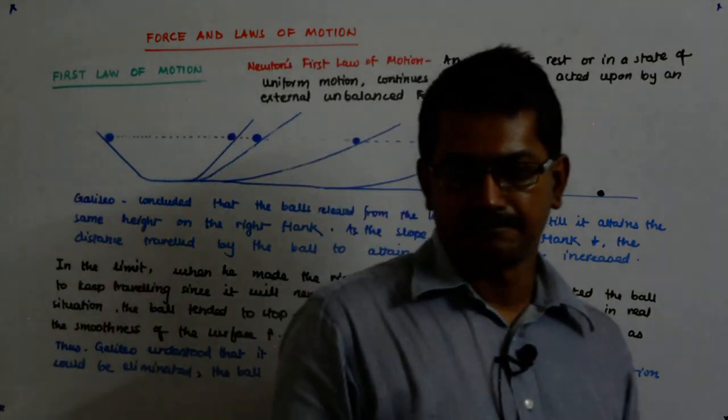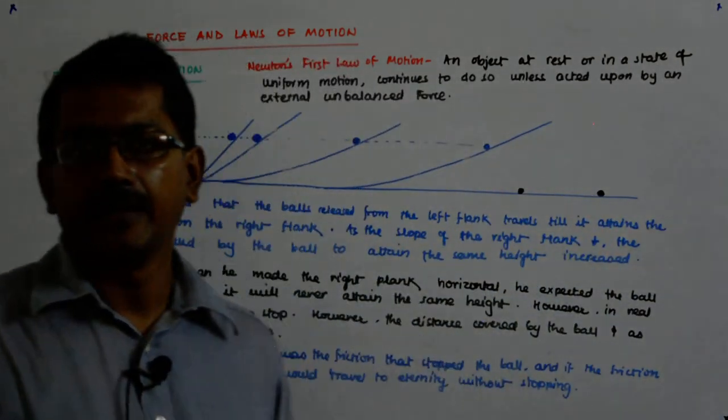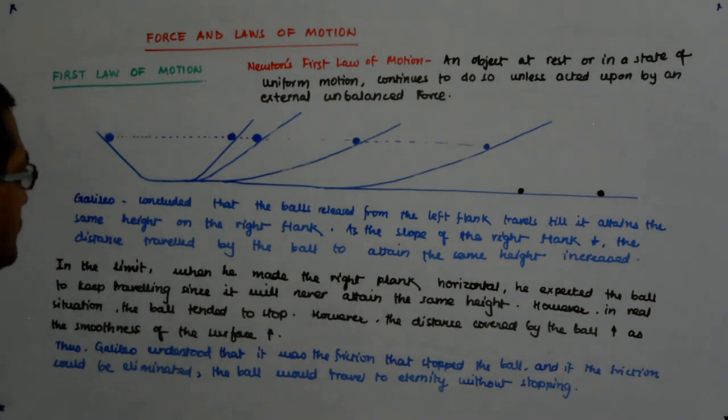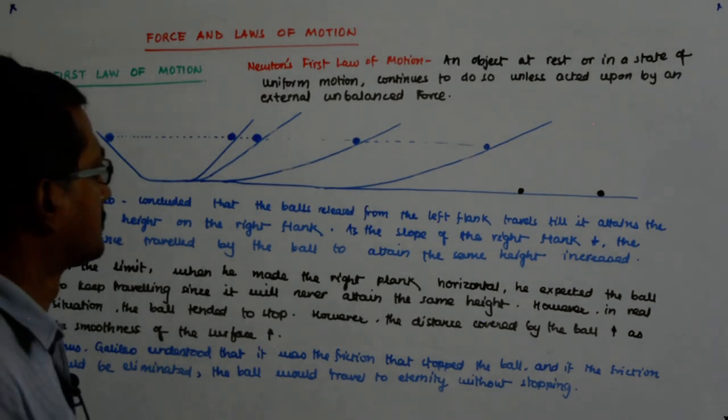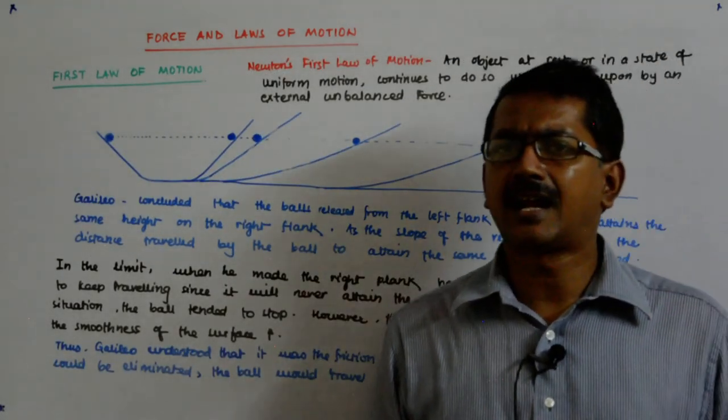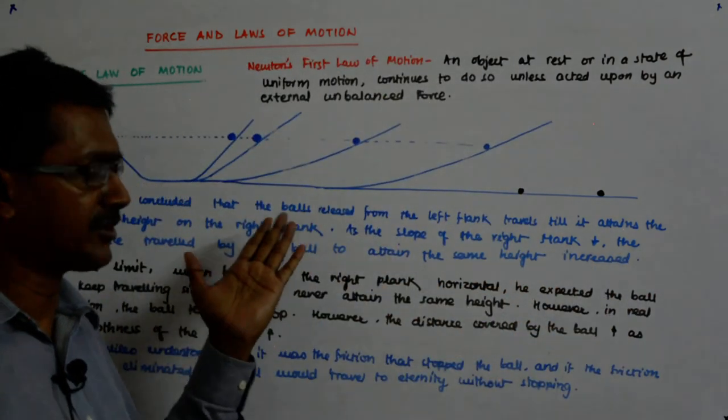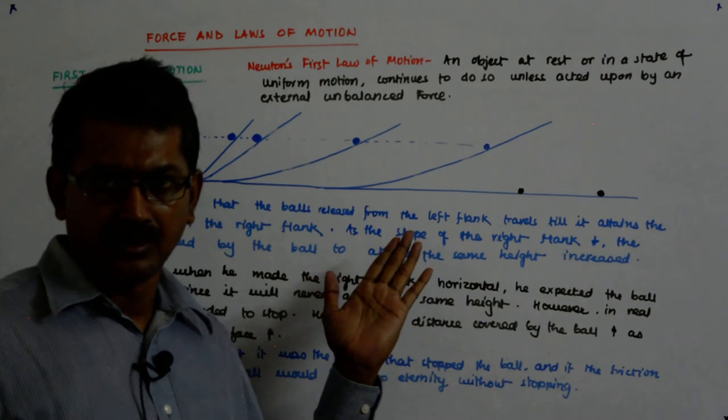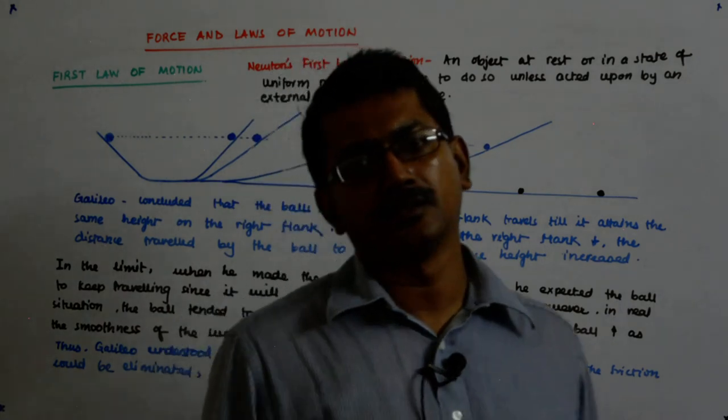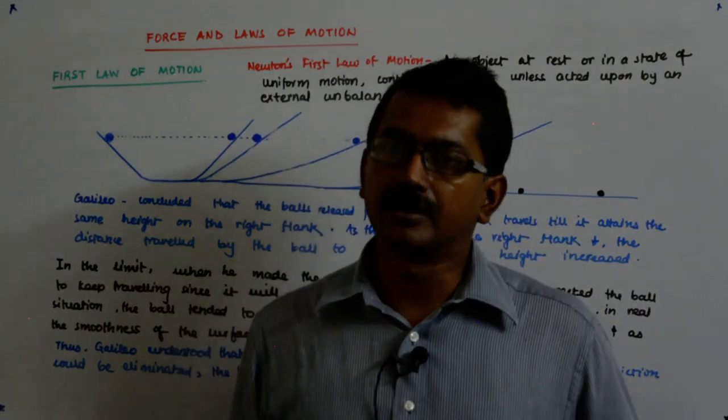He wrote a book by the name Principia Mathematica where he compiled this. And we should understand it by everything that we have discussed prior to this including the Galileo's experiment. Because it was this experiment and other observations that led them deny what earlier people had said.